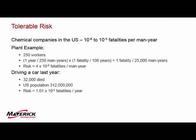Another example is driving a car. Every year 32,000 people die in the United States. Out of a population of 312 million, that risk is 1.01 times 10 to the negative 4 fatalities per year, about two and a half times what a chemical plant worker faces. And we accept that risk of driving a car every day. So that kind of puts things into perspective. That's where some of those numbers come from and how you define a tolerable risk.